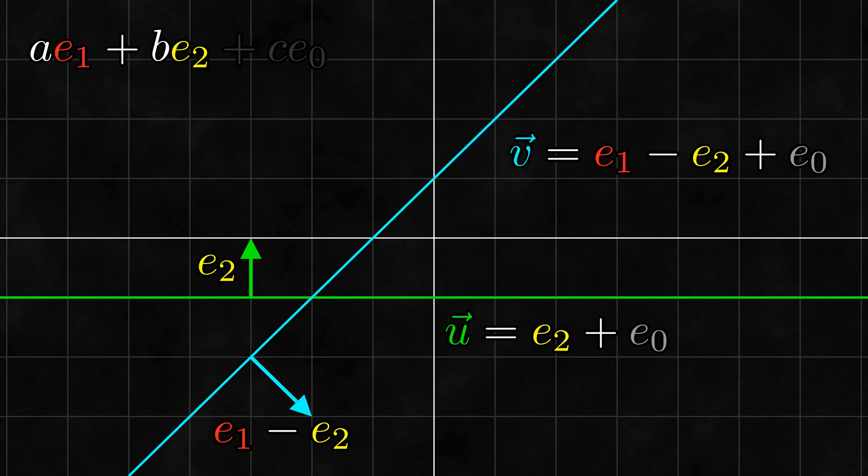Well, the slope is the rise over the run, which for us is the e2 component and the e1 component respectively. Thus, the slope of the arrow is b over a, which is the slope that is perpendicular to the slope of the line that we found earlier. What all of this shows is that when we are working with the linear space of lines, every line is associated with an arrow that is perpendicular to it.